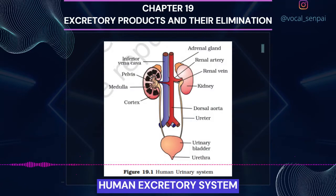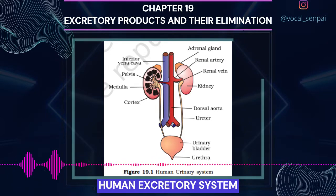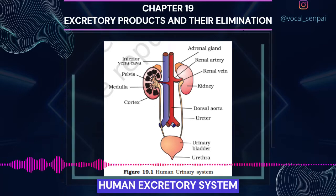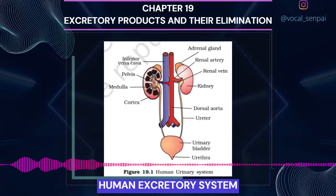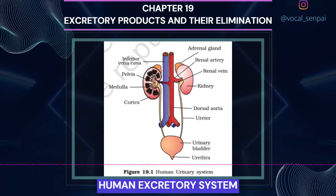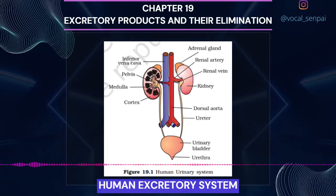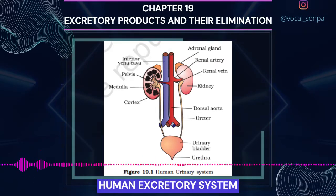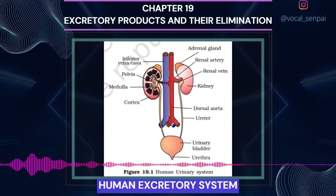Human Excretory System. In humans, the excretory system consists of a pair of kidneys, one pair of ureters, a urinary bladder and a urethra (figure 19.1). Kidneys are reddish-brown, bean-shaped structures situated between the levels of last thoracic and third lumbar vertebra, close to the dorsal inner wall of the abdominal cavity. Each kidney of an adult human measures 10-12 cm in length, 5-7 cm in width, 2-3 cm in thickness, with an average weight of 120-170 g. Towards the center of the inner concave surface of the kidney is a notch called hilum, through which ureter, blood vessels and nerves enter.